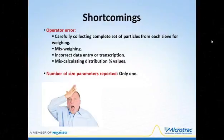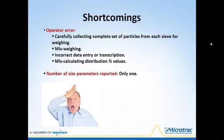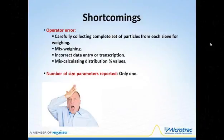This slide is a reminder of some shortcomings of sieve analyses. First is the potential for operator error — particles remaining on each sieve must be carefully collected. Standards state to poke particles stuck in sieve openings into the next smallest sieve retained mass, but this is usually done the other way around. Missed weighing of a sieve fraction is a common error, as are incorrect data entry, transcription errors, and miscalculation. The number of size parameters reported by sieves is only one: a mass percent by size fraction.